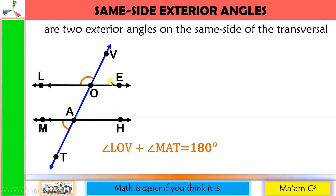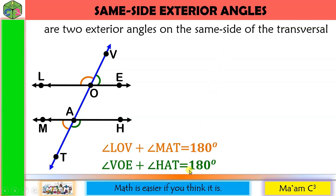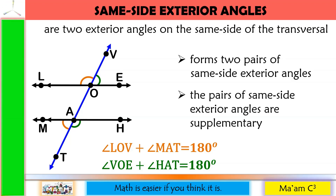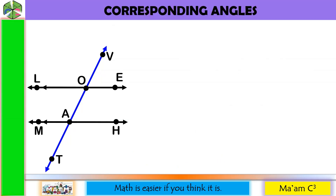Let's get another pair, this time on the right side. Angle VOE and angle HAT are same-side exterior angles. When you add them, it is also equal to 180 degrees. So parallel lines cut by a transversal form two pairs of same-side exterior angles, and the pairs of same-side exterior angles are supplementary because their measurements add up to 180 degrees.